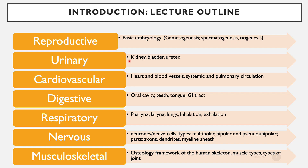For the urinary system, we will be looking at the kidney, the bladder, and the ureter. Then for cardiovascular, we will look at the heart and the blood vessels, and then we look at systemic circulation as well as pulmonary circulation.